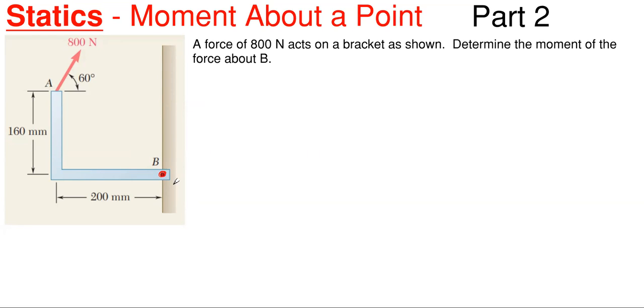So keep in mind that moment will be a force times a perpendicular distance. So if you were to keep this 800 newtons of force in its angled form here, you would need to find the distance to point B that forms a right angle with that 800 newtons as shown.